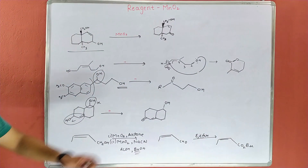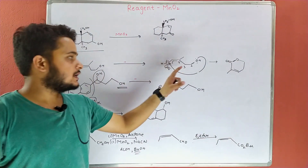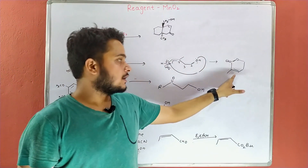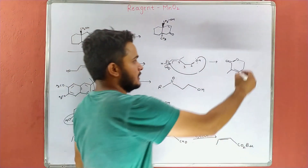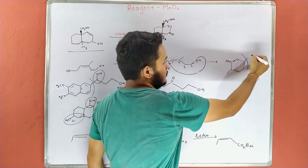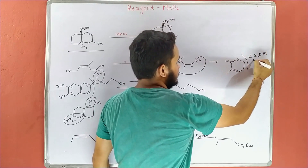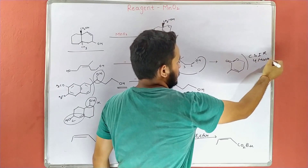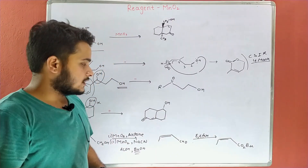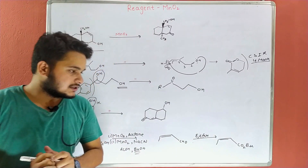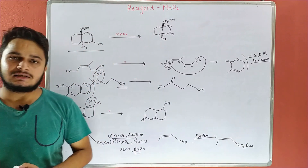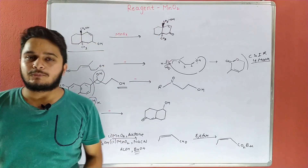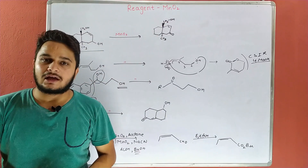यह question समझ में आ गया। इसके बाद cyclization हो जाएगा — ring compound form हो जाएगा। यह question CSIR में पूछा गया था — 4 marks का। ध्यान रखिए, this is a very important reagent।